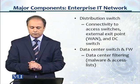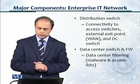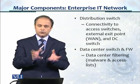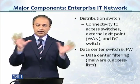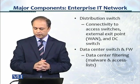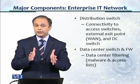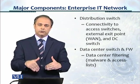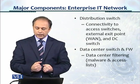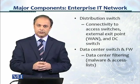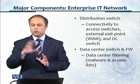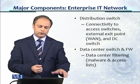The distribution switch provides connectivity to access switches, to external exit points, and to the data center switch. It is really the connectivity hub which connects all the main devices together. The data center switch performs a very important function — it must have an integrated firewall to perform data center filtering to prevent malware using access lists. Next generation firewall functionality, as seen at the edge, can also be implemented within the data center firewall.